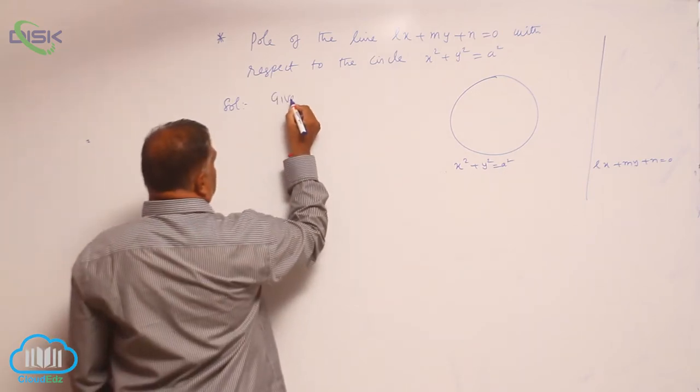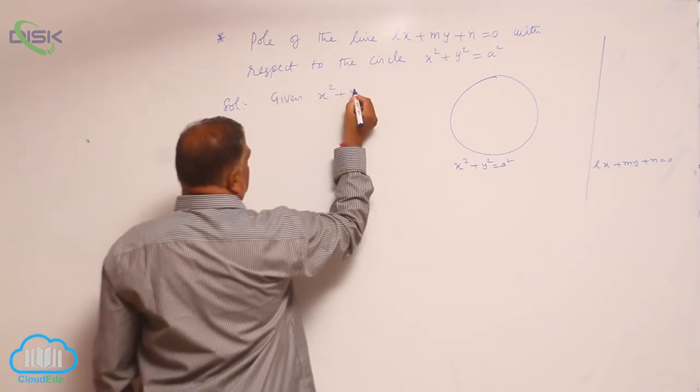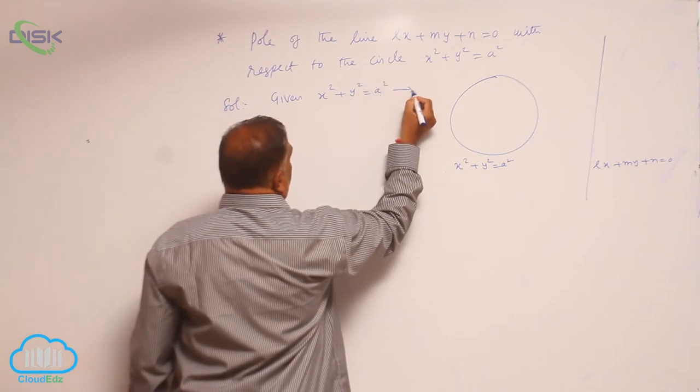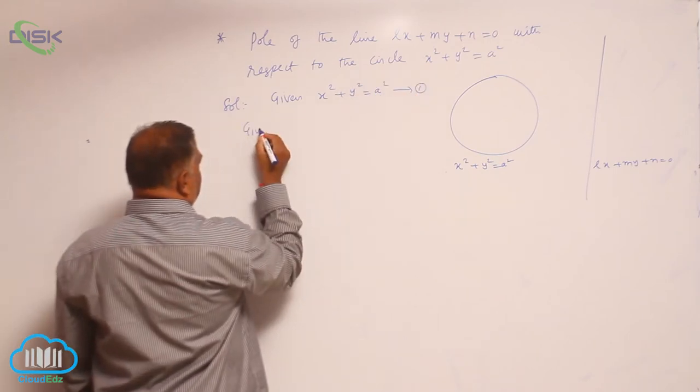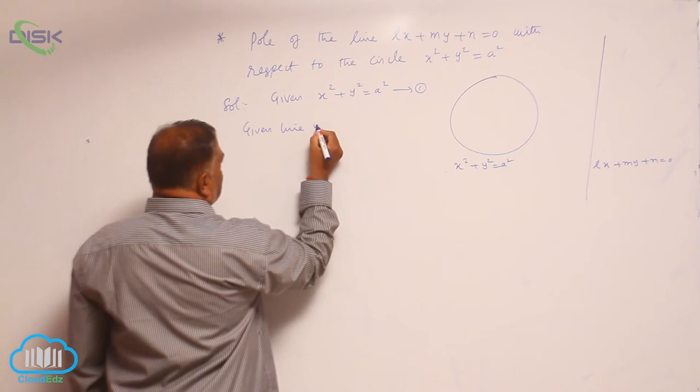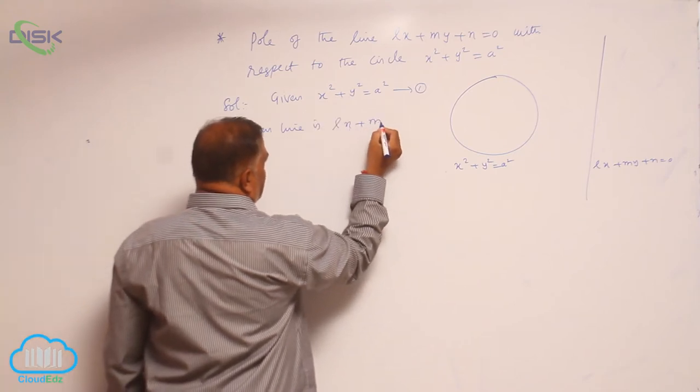Given circle is x² + y² = a². Given line is Lx + my + n = 0.